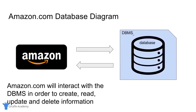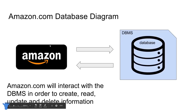Database management systems can also help you back up your data and import and export data from other sources. They can also interact with software applications — amazon.com is a website that interacts with the Amazon database, which is stored most likely using a database management system. Amazon isn't creating or reading or updating information directly — Amazon is telling the database management system to do that for it. By going through the database management system, we can be sure that all the data is getting stored correctly.